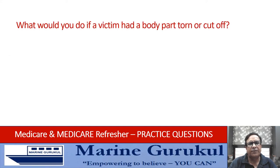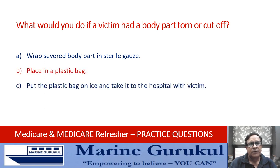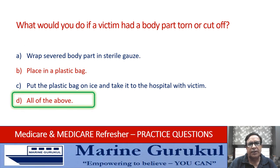What would you do if a victim had a body part amputated or cut off? Wrap the severed body part in sterile gauze; place it in a plastic bag; put the plastic bag on ice and take it to the hospital with the victim; or all of the above? The answer is all of the above — these are the required actions when a victim's body part is torn or cut off.